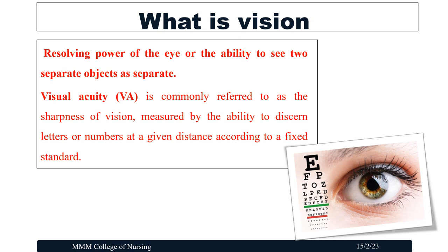What is vision? Vision is the resolving power of the eye, or the ability to see two separate objects as separate. Visual acuity is commonly referred to as the sharpness of vision, measured by the ability to discern letters or numbers at a given distance according to a fixed standard.